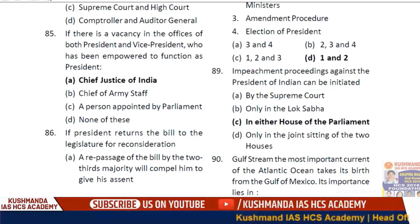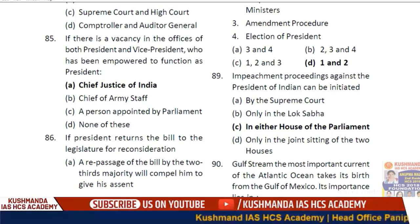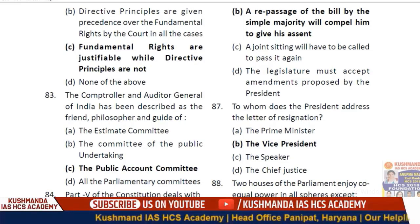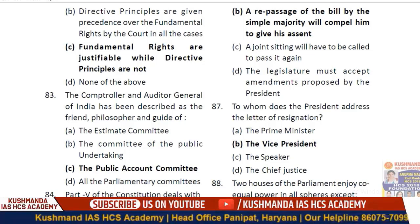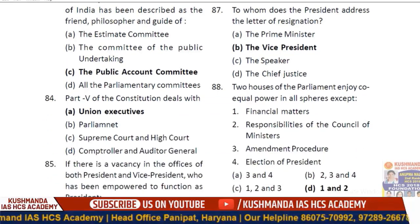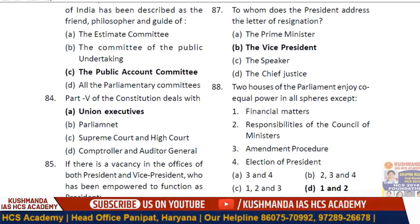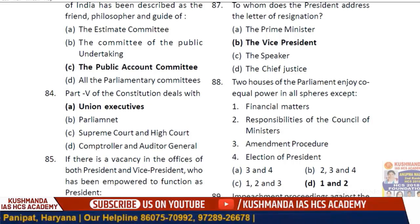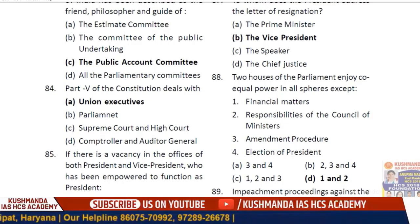Question 86: If the President returns a bill to the legislature for reconsideration, option D — a re-passage of the bill by simple majority will compel him to give his assent. Question 87: To whom does the President submit his letter of resignation? To the Vice President.